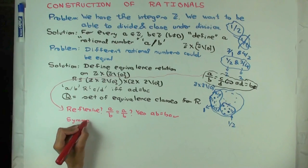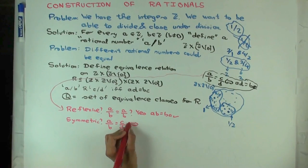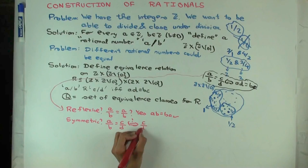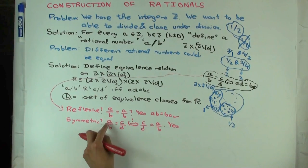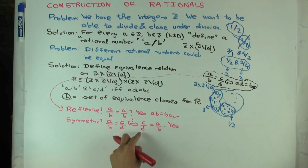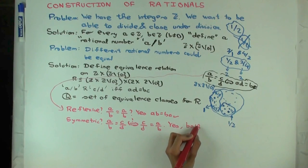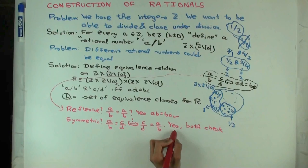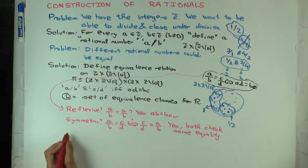Symmetric. What do you need to do to check that it's symmetric? So A/B R C/D, does that imply that C/D R A/B? Yes. Why? Because the equality is symmetric. I mean, you're checking AD equals BC or checking CB equals DA, right? Both check the same equality.